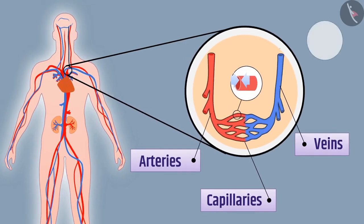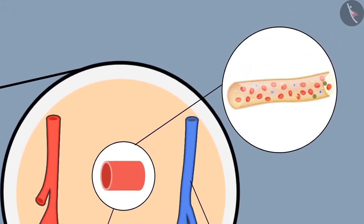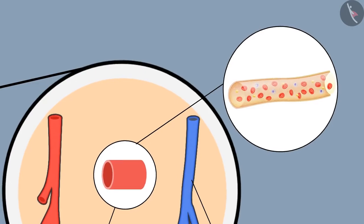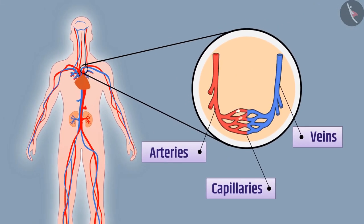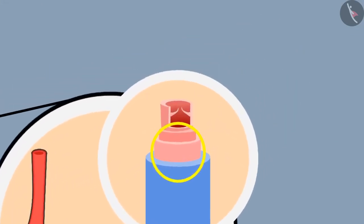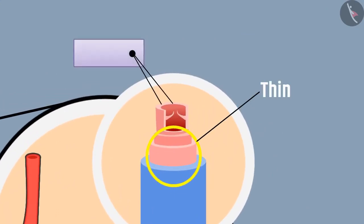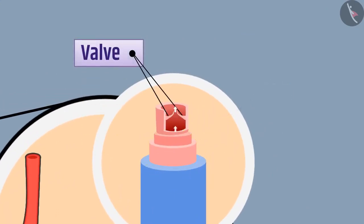The wall of the smallest vessel is unicellular thick, allowing easy exchange of substances between blood and cells. Capillaries join together to form veins, which carry deoxygenated blood from various parts of the body back to the heart. The walls of the veins are thin and have valves so that blood flows in only one direction.